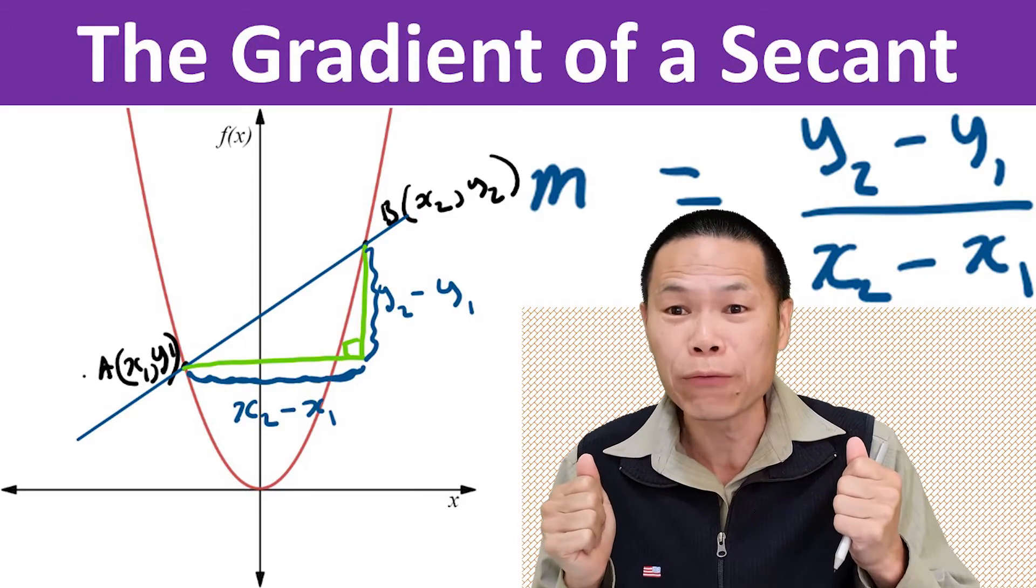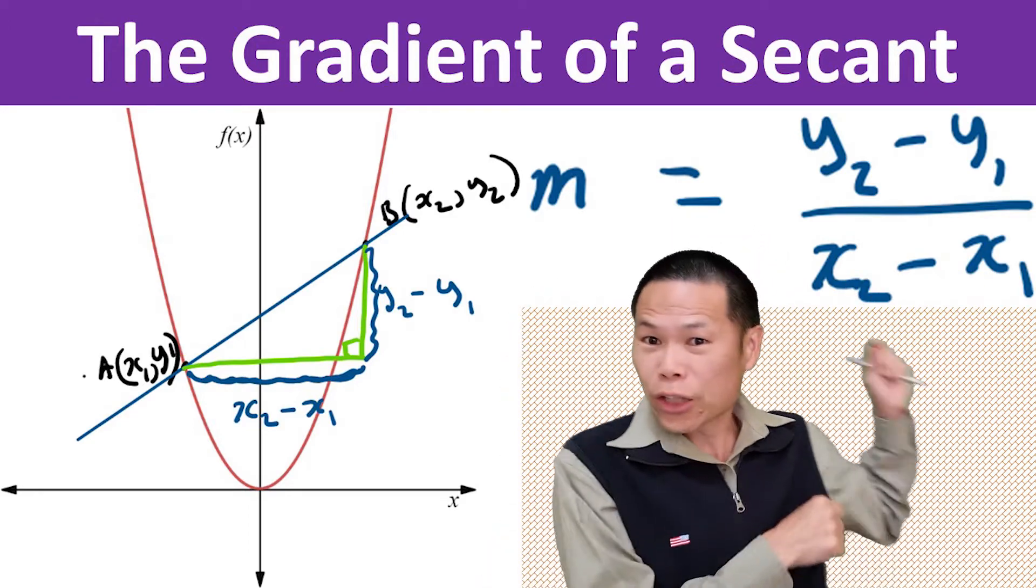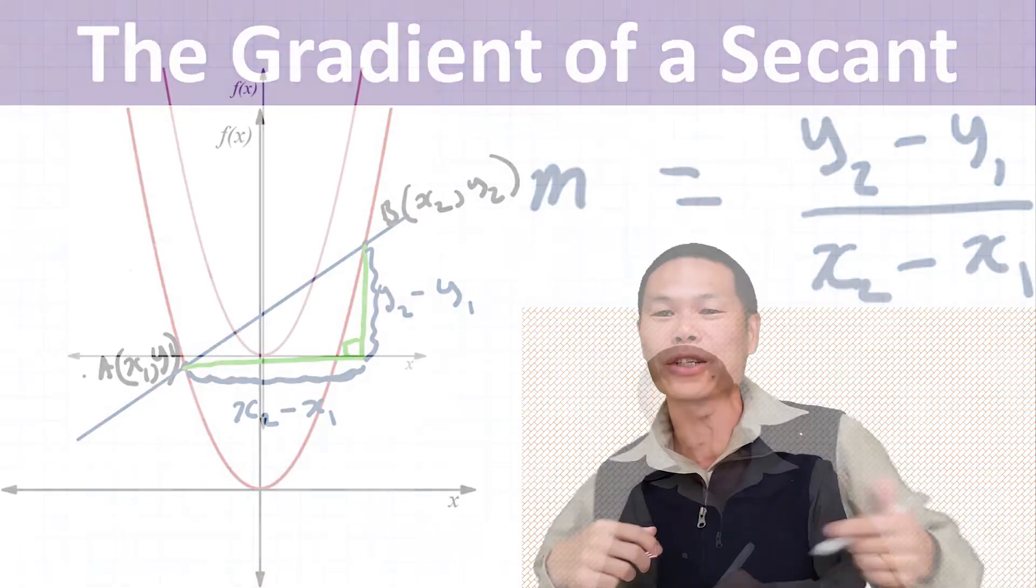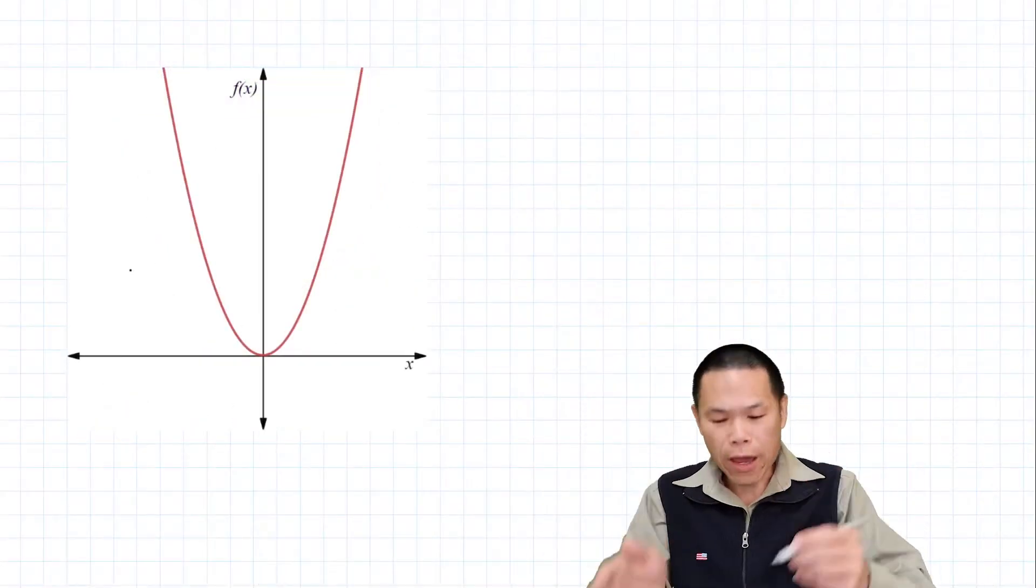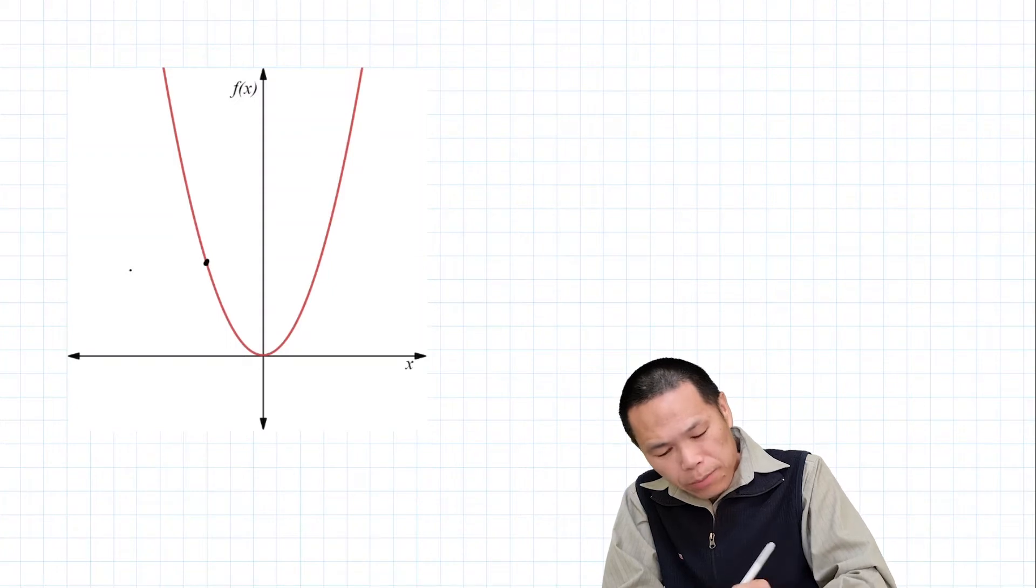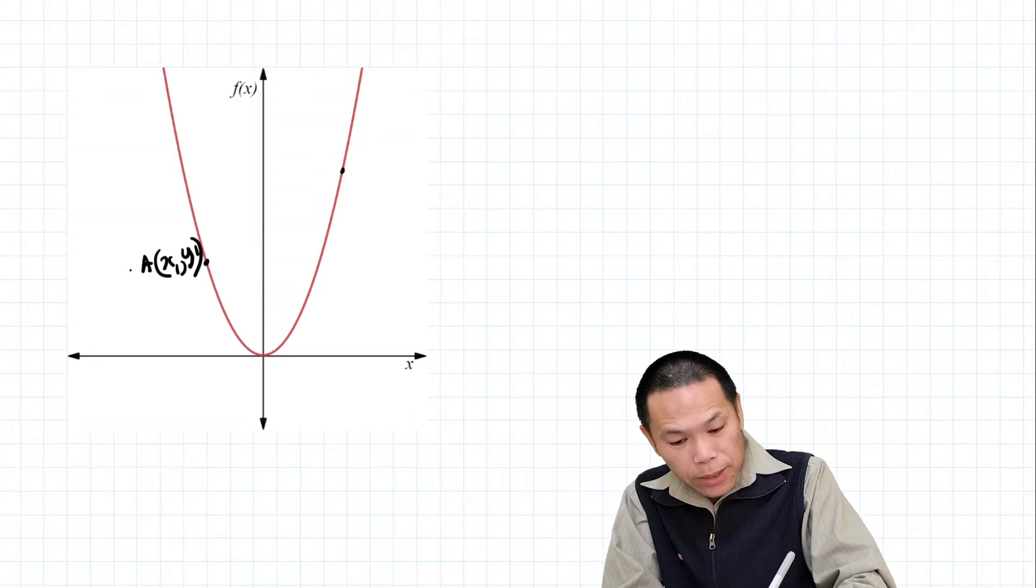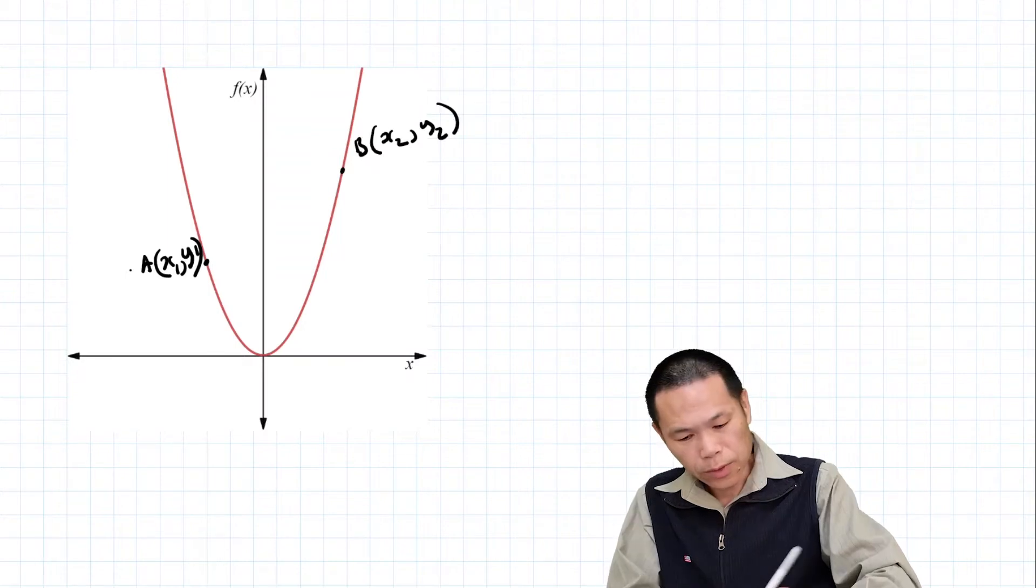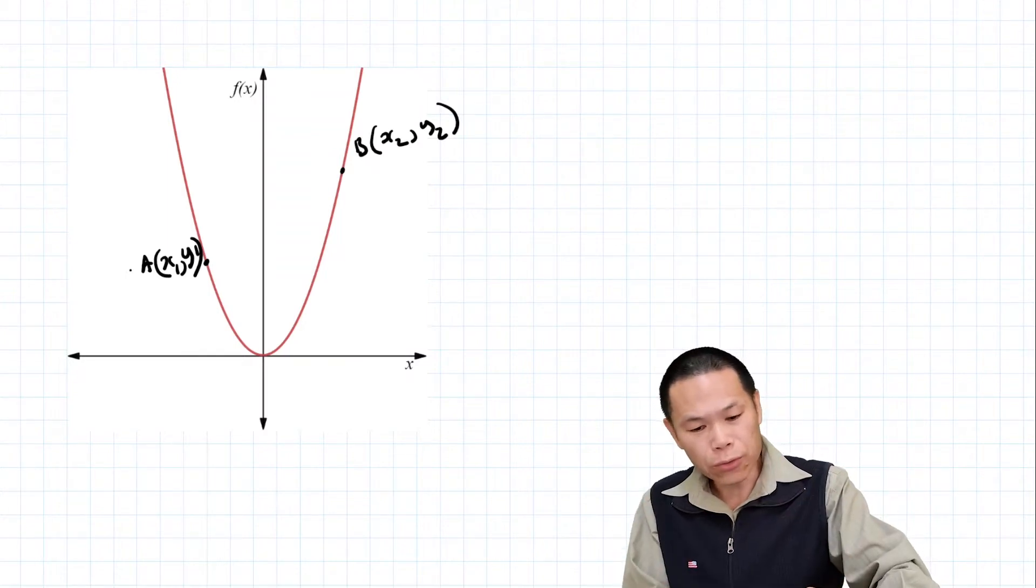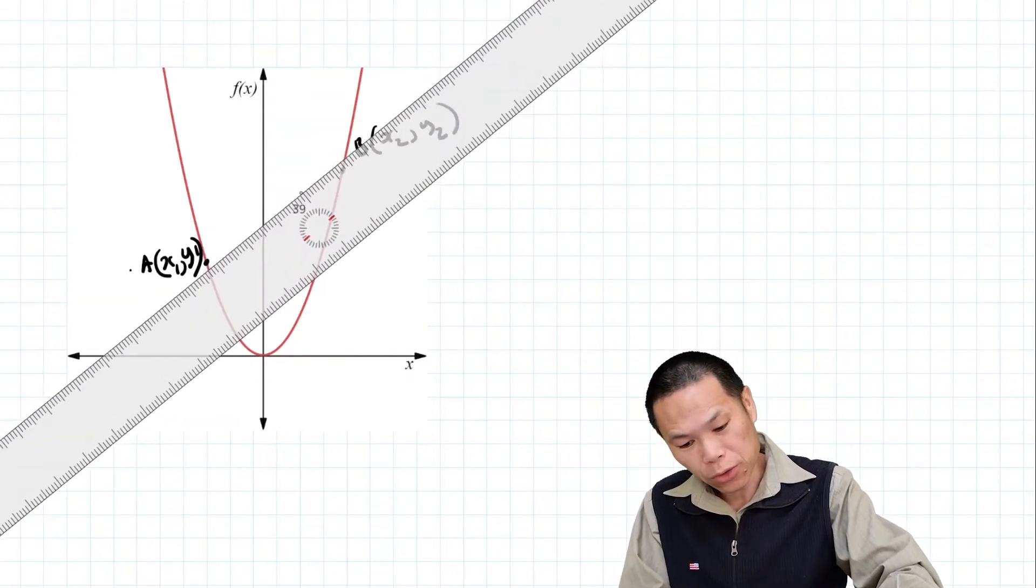Let's say we have point A and B on this parabola here. Point A is at (x₁, y₁), and point B is at (x₂, y₂). Now, a line passing through point A and B - let me just draw this.